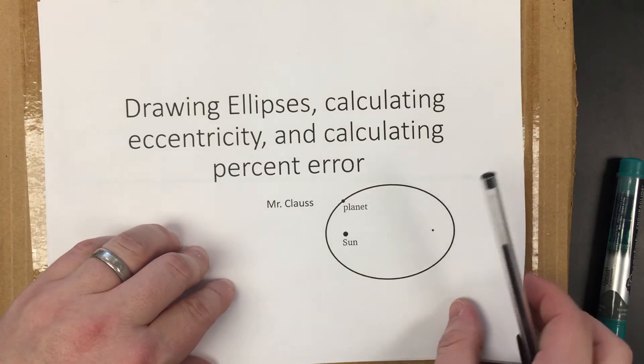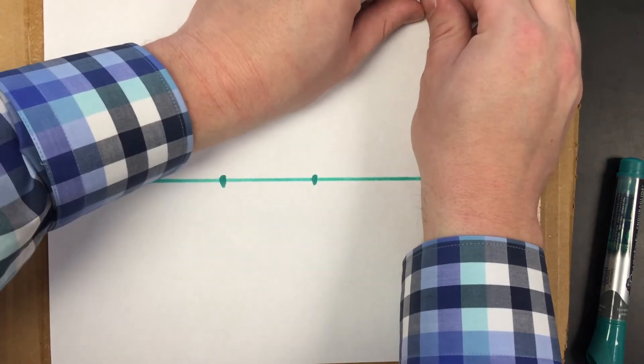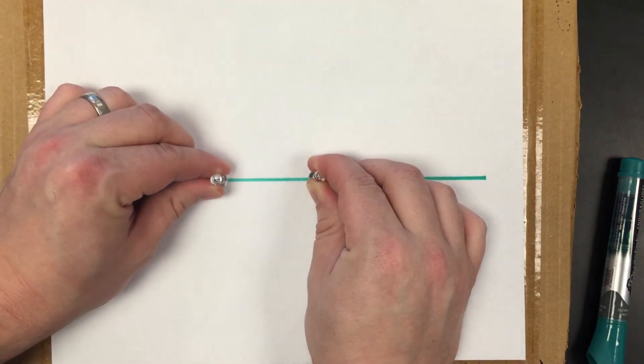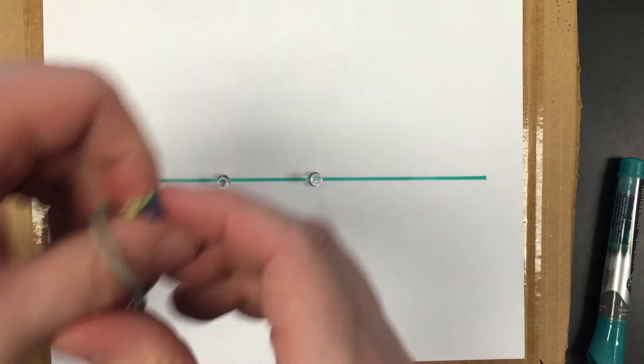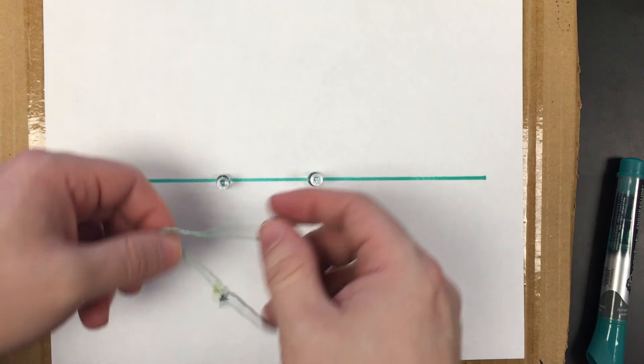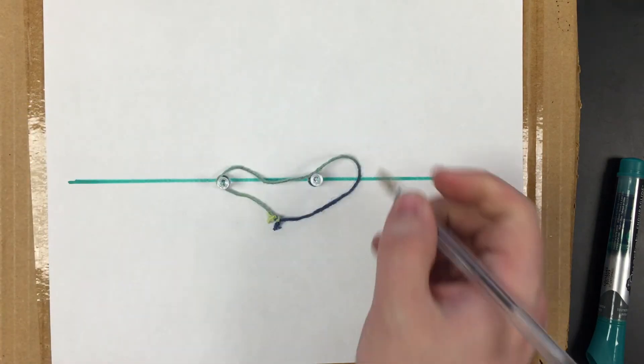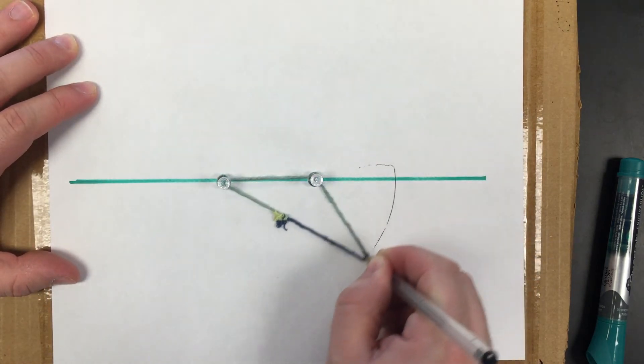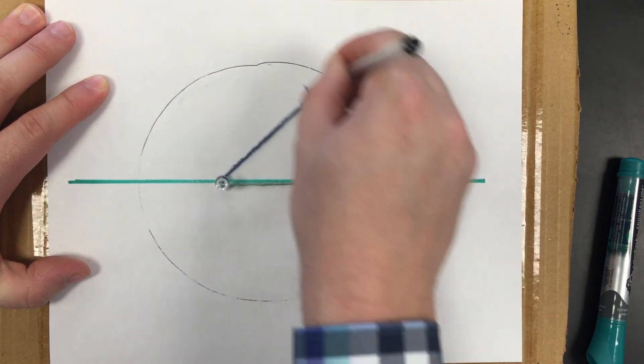So when you're asked to draw an ellipse, you're going to be given something like this where your two dots on the line represent where you're going to stick your two pins. Those are going to be the foci or the focal points of your ellipse. You're going to then take your string, wrap it around the base of the pins, the actual metal part, and then you can stretch the string tight to draw your ellipse like this.